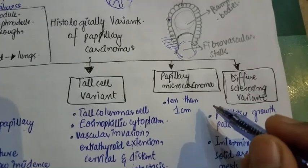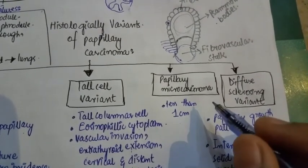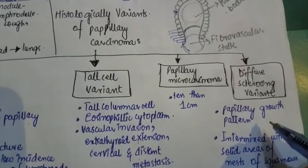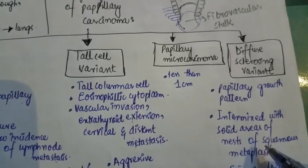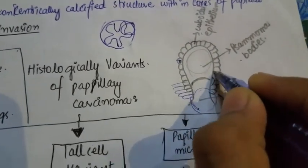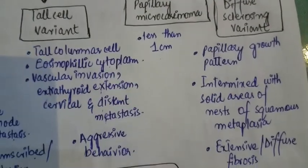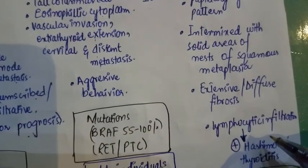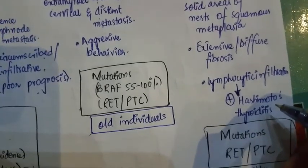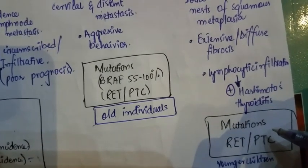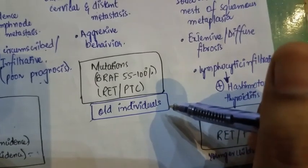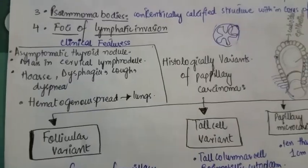Papillary microcarcinoma has a similar appearance to papillary carcinoma but must be less than one centimeter. The diffuse sclerosing variant has a papillary growth pattern with intermixed areas of squamous metaplasia and extensive diffuse fibrosis. There is lymphocytic infiltration, which can stimulate Hashimoto's thyroiditis-like changes. Mutations are only in RET/PTC. This variant presents in younger children, while the tall cell variant presents in older individuals.